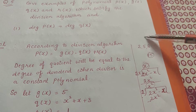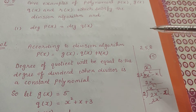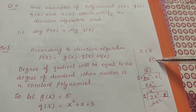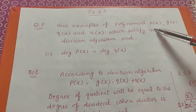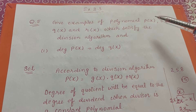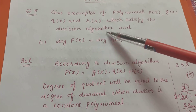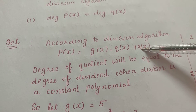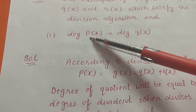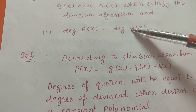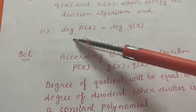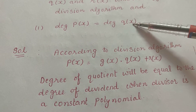Similarly, you have to give examples of four polynomials, but they must satisfy the division algorithm p(x) = g(x)·q(x) + r(x), and one more condition: the degree of p(x) must equal the degree of q(x). Whatever p(x) you write, its degree should match the degree of q(x).